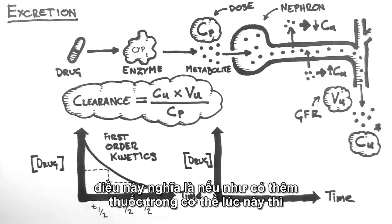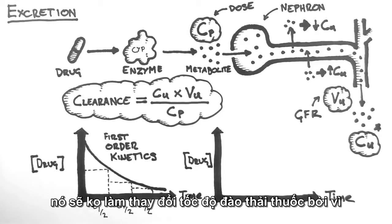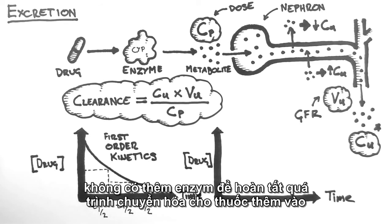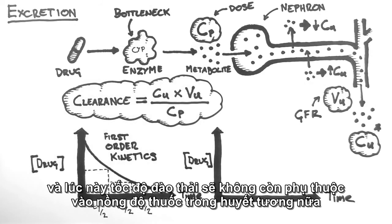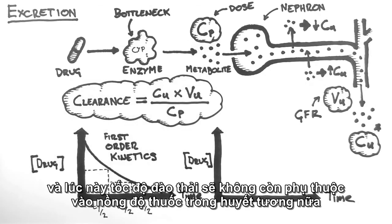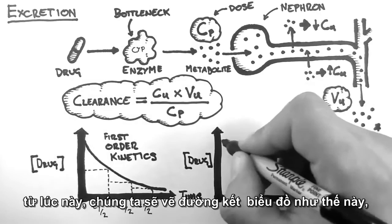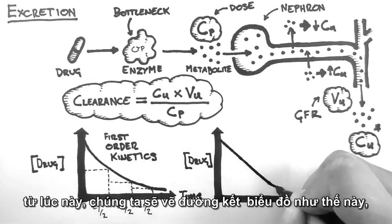This means that if more drug is added to the body, it won't change the rate of excretion because there is no extra enzyme to process the extra drug. This effectively creates a bottleneck in the process. And the rate of excretion is now independent of the concentration of drug in the plasma.